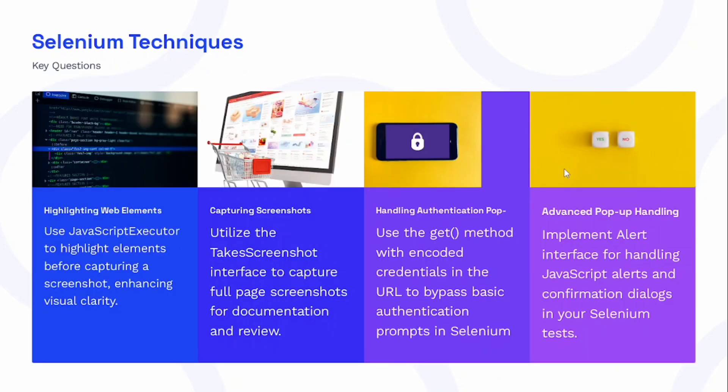The next set of questions is from Selenium techniques. First, highlighting web elements: we use JavascriptExecutor to highlight web elements. Next, how to capture screenshots in Selenium: utilize the TakeScreenshot interface to capture full-page screenshots for documentation and review. How to handle authentication popups: use the GET method with encoded credentials in the URL to bypass basic authentication prompts in Selenium. Last, advanced popup handling: implement the Alert interface for handling JavaScript alerts and confirmation dialogues.